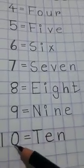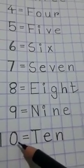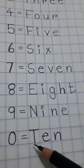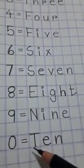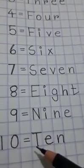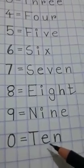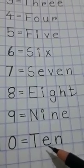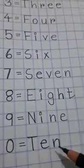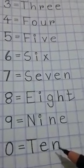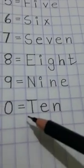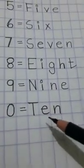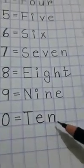Here is one-zero — ten. At first I will write capital letter T, then I will write E, then I will write N. Ten. T-E-N. Ten.